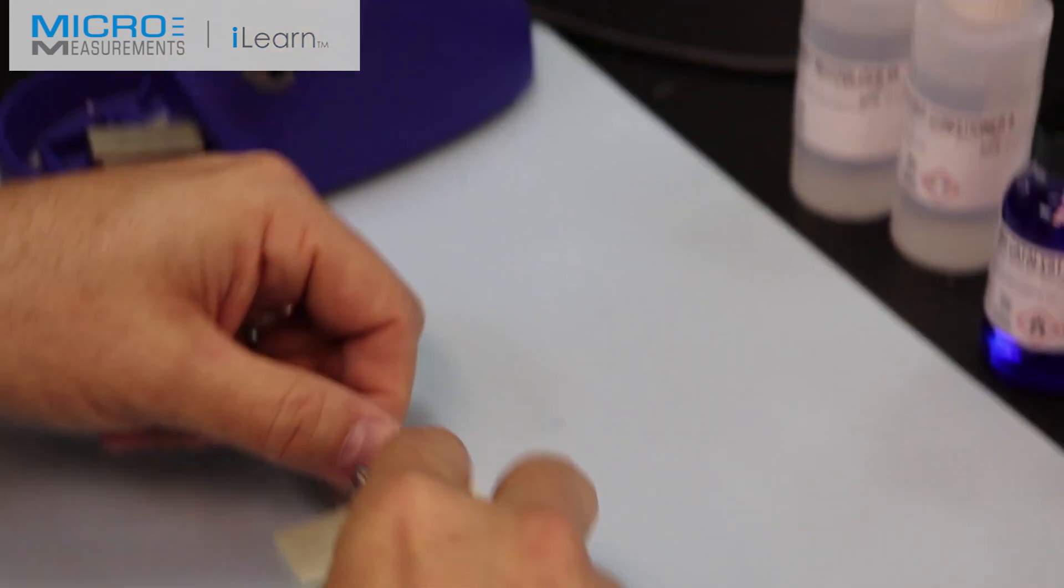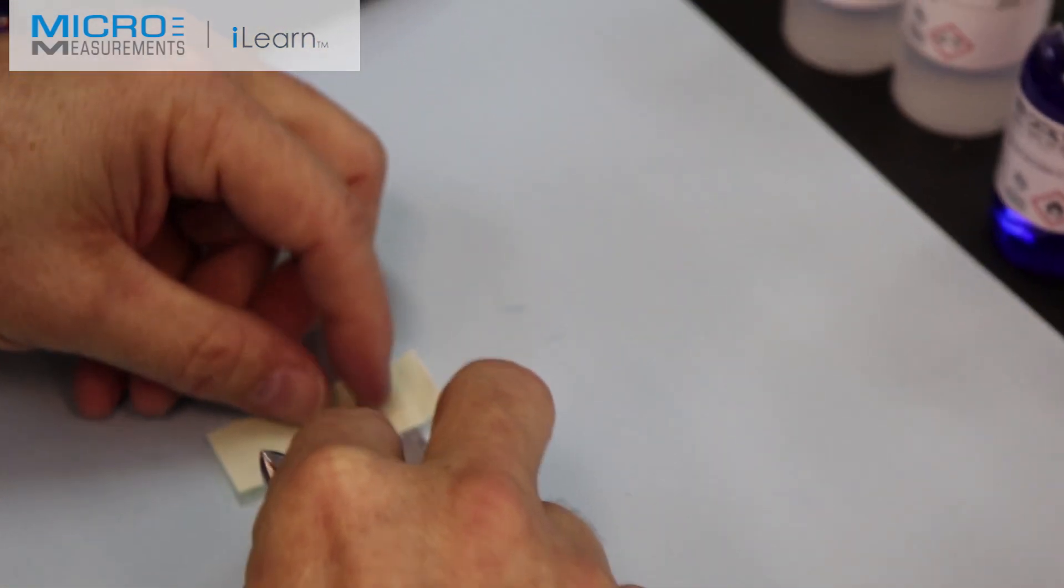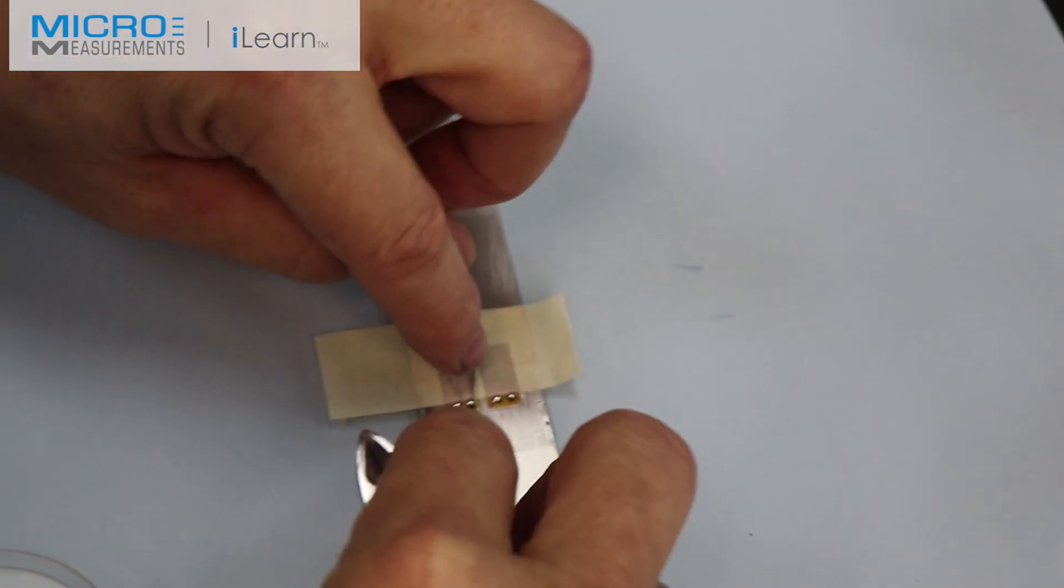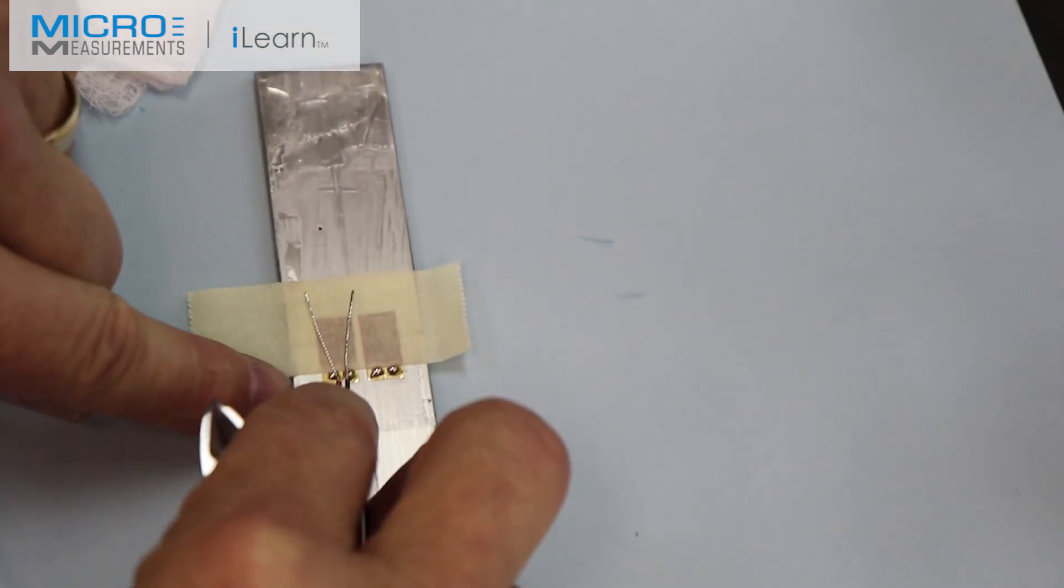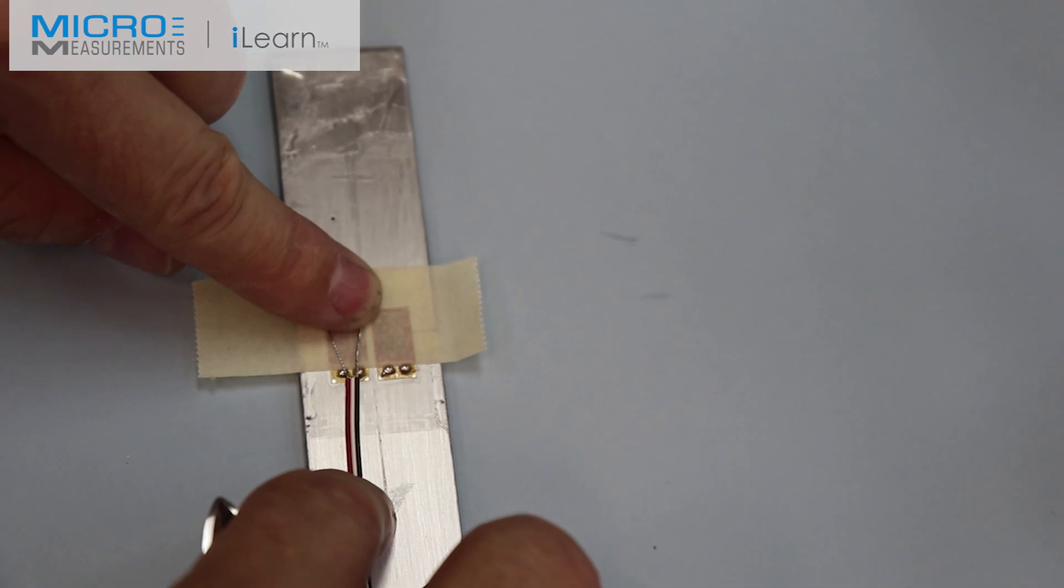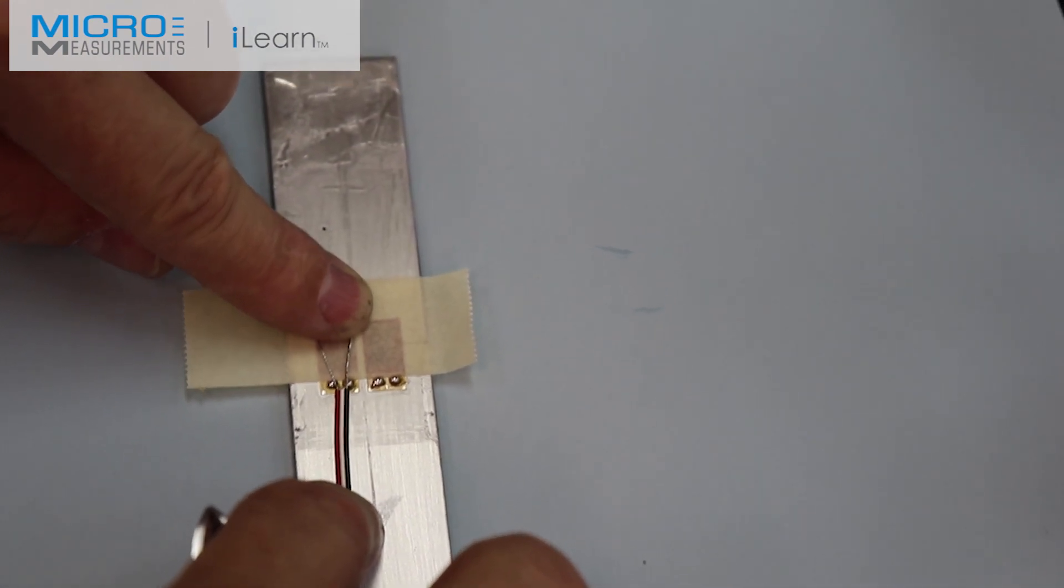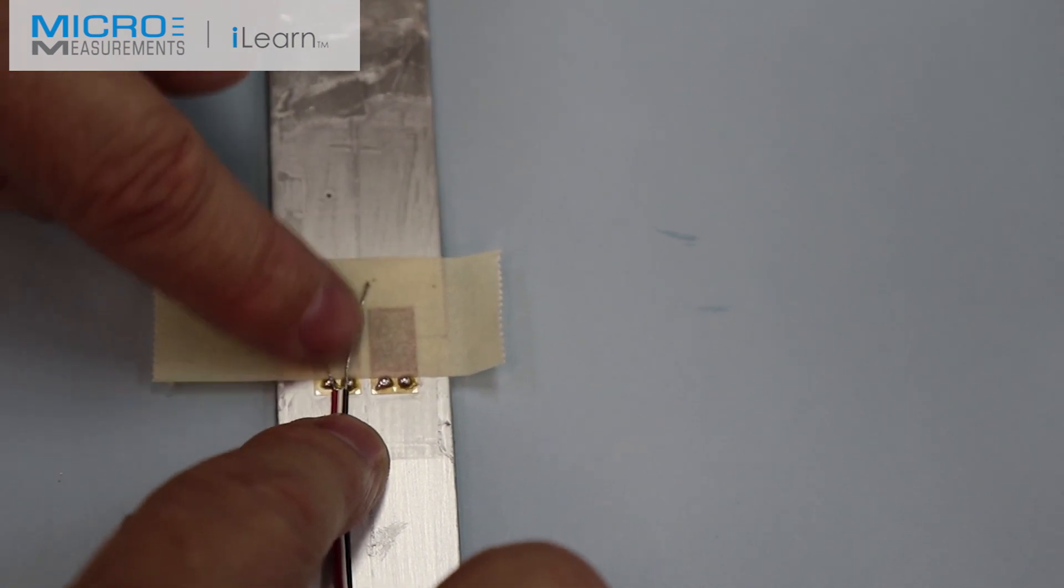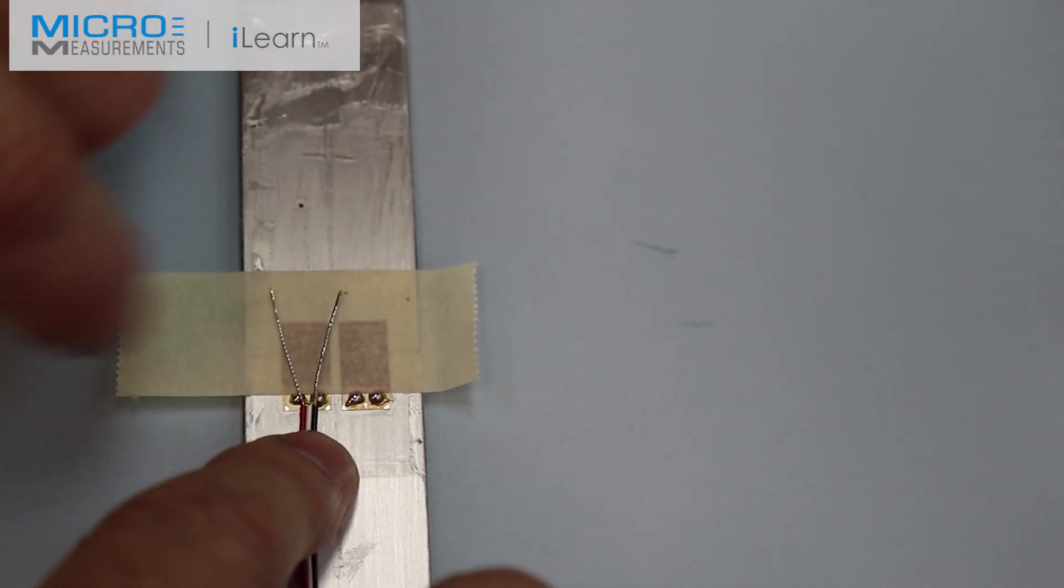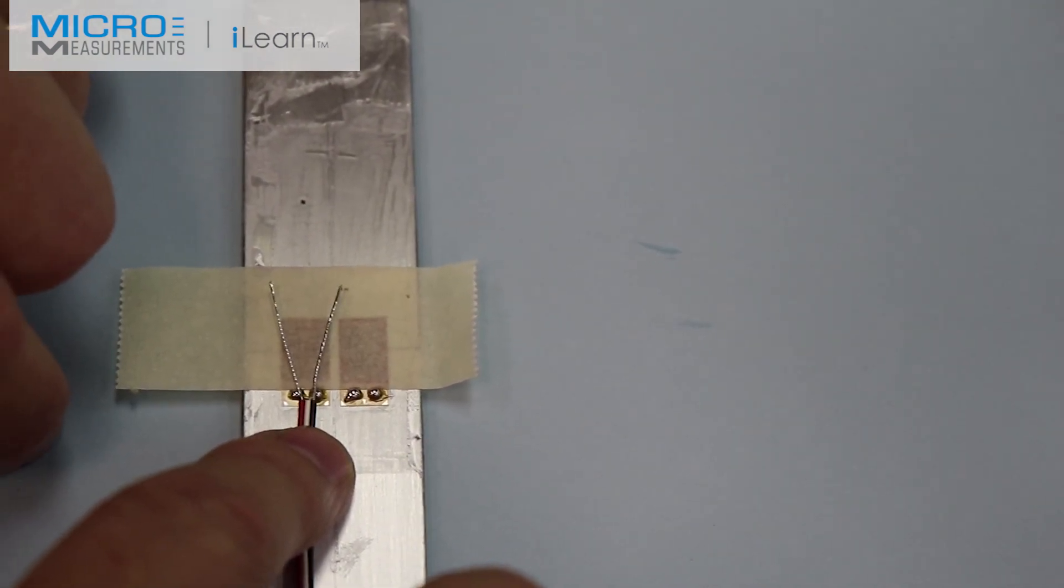So what we're going to do is we're going to trim that to make it shorter. And ideally, what you would find is that the exposed conductor would rest right on top of the solder connections. And the insulation would be on top of the backing on the strain gauge to make sure that you're electrically insulated. So you really trim off most of this exposed conductor and leave probably about a sixteenth of an inch of it left.